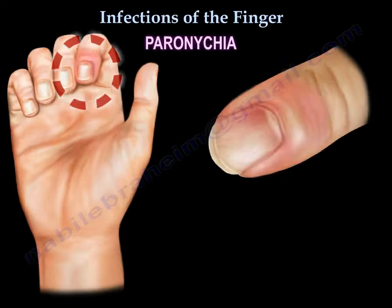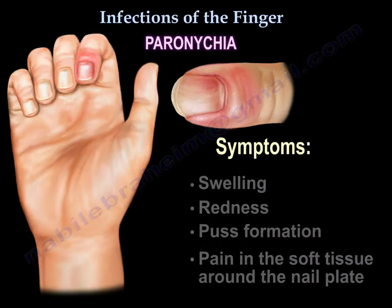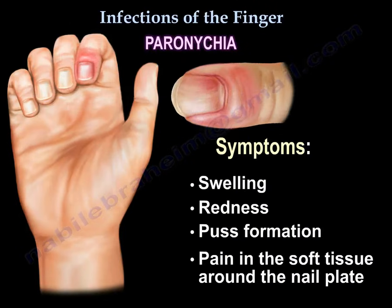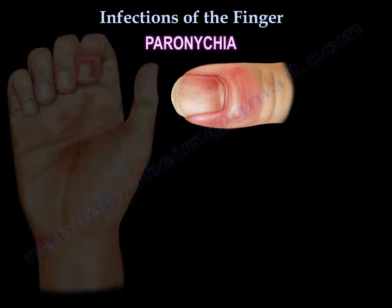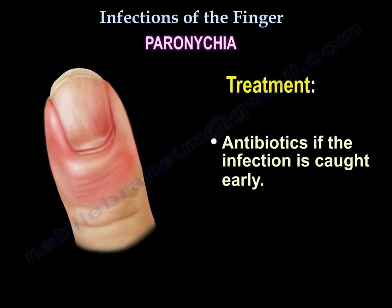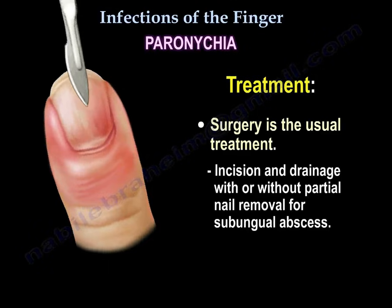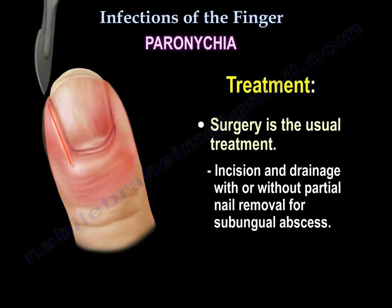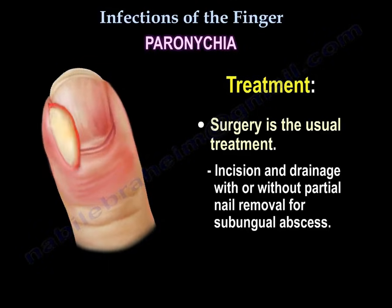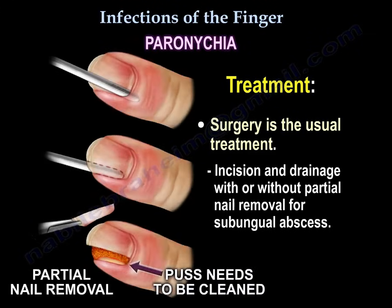Paronychia — symptoms include swelling, redness, pus formation, and pain in the soft tissue around the nail plate. Treatment is antibiotics if caught early. Surgery is the usual treatment: incision and drainage with or without partial nail removal for subungual abscess, as you can see here.